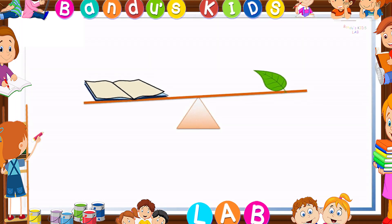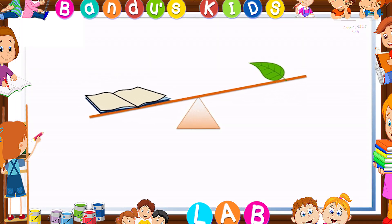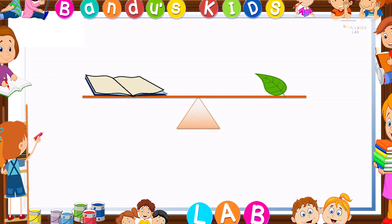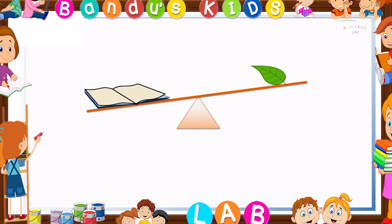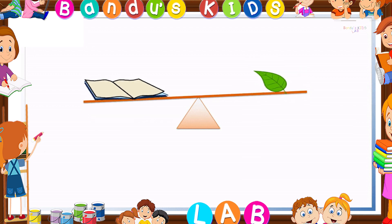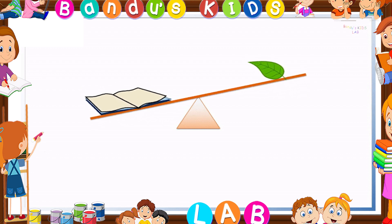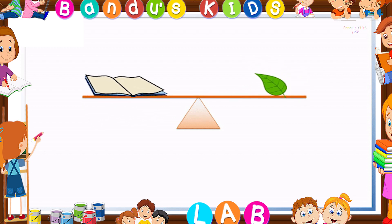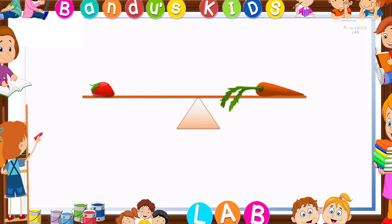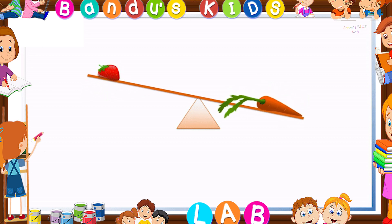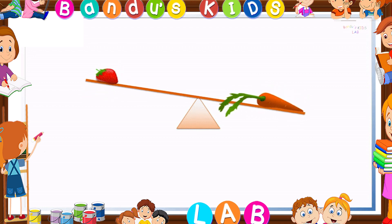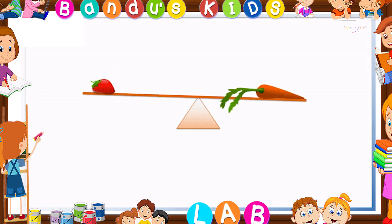Kids, different objects have different weight. Some are heavy and some are light. When we compare objects based on their weight, then we can get heavy and light. Kids, let's look at some examples of heavy and light.